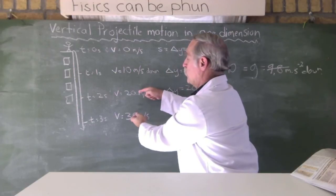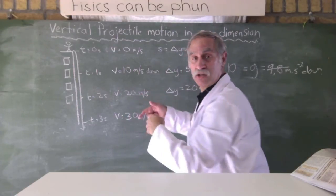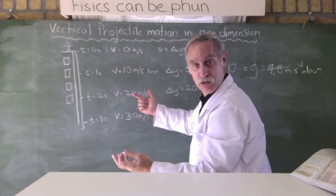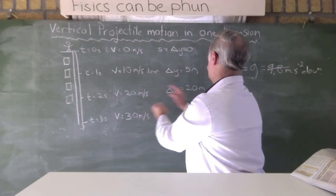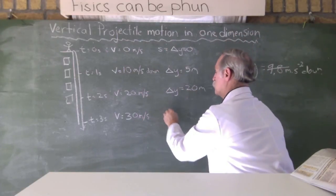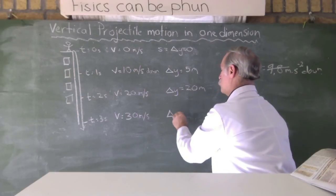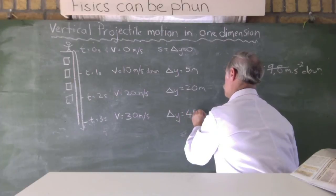Its average velocity is 25 meters per second. In that second, it's going to travel 25 meters. So, it's going to travel 25 meters plus the 20 it's already traveled. So, our delta y or change of displacement is going to be 20 plus 25, 45 meters.